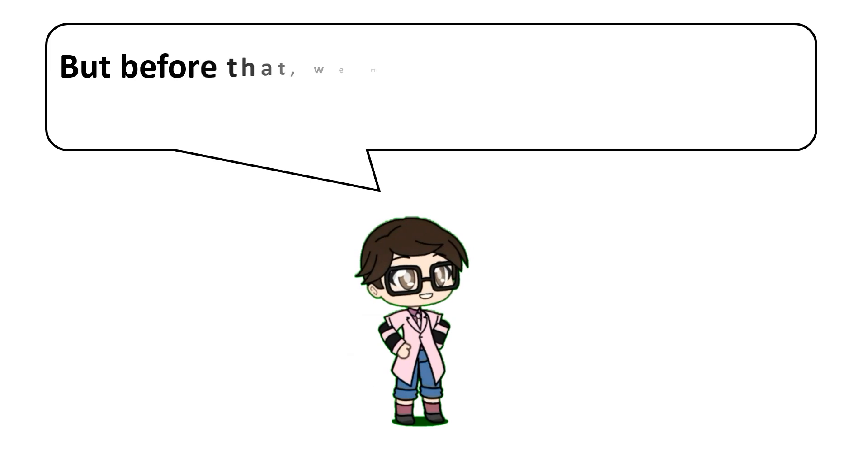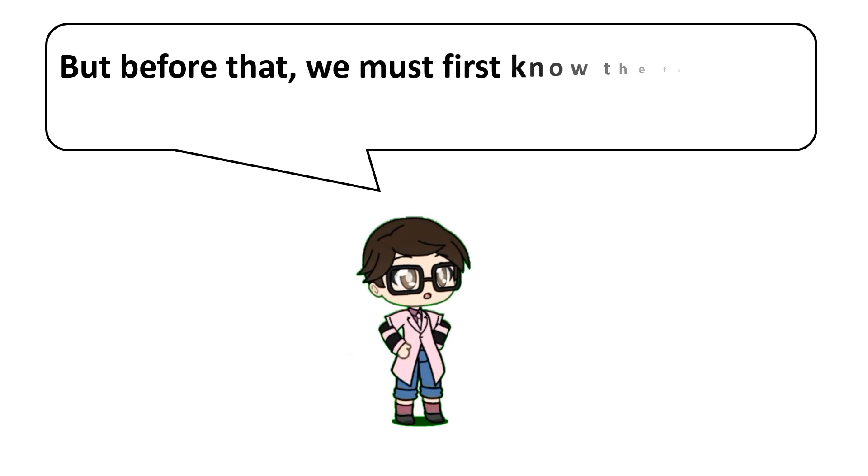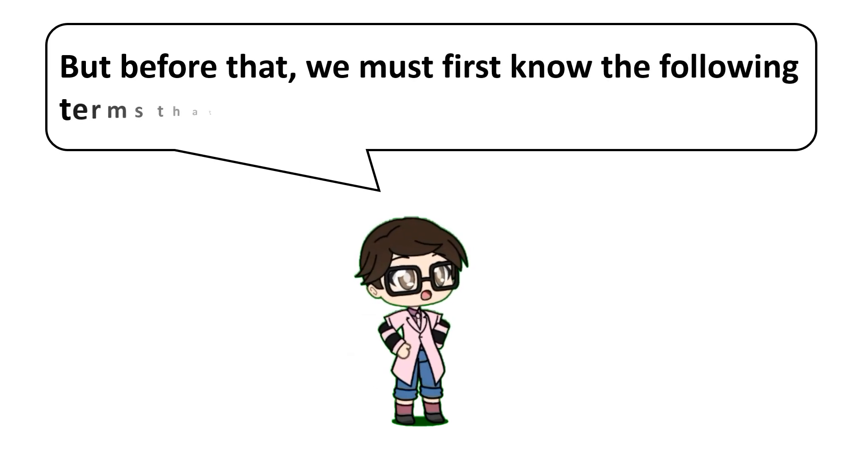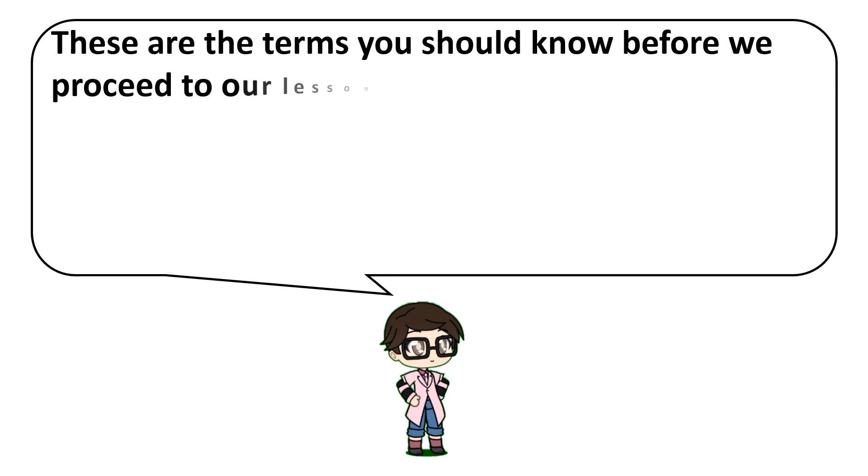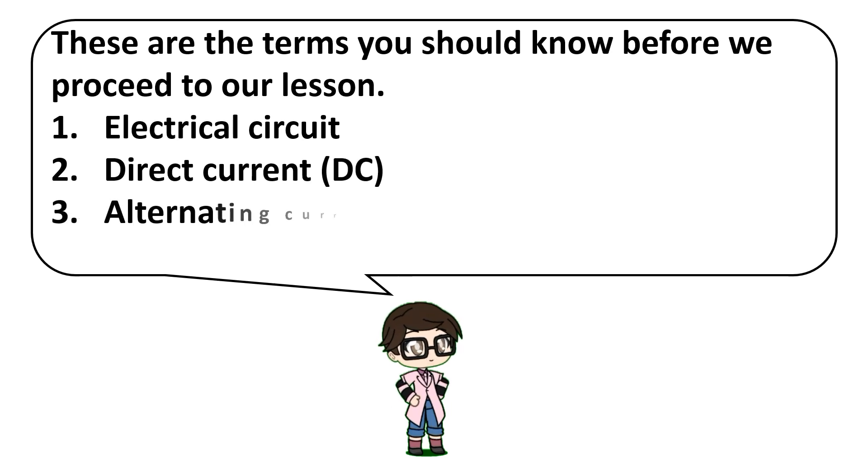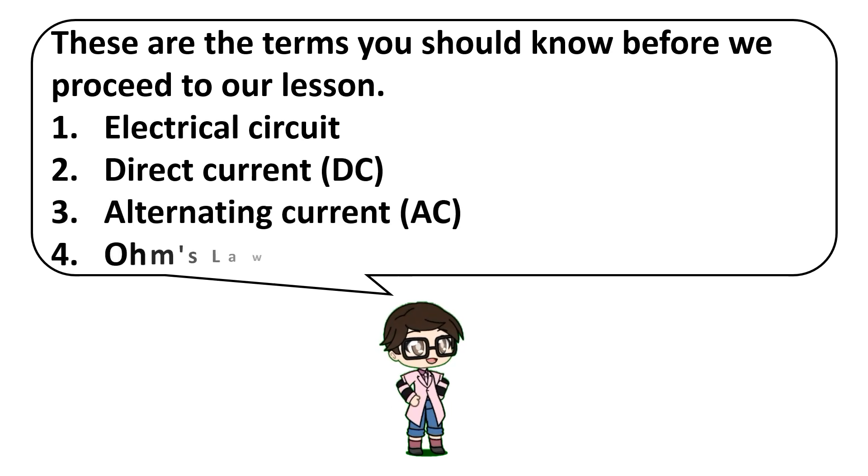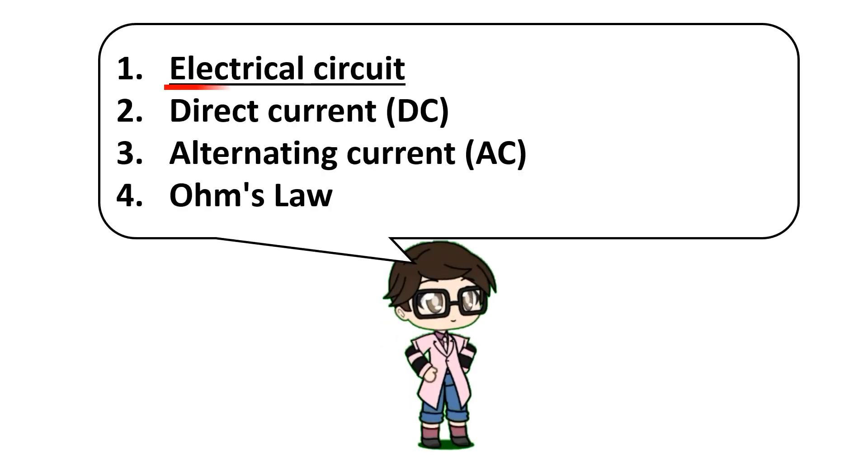But before that, we must first know the following terms that we will use in our lesson today. These are the terms you should know before we proceed to our lesson: one, electrical circuit; two, direct current; three, alternating current; and four, Ohm's law.